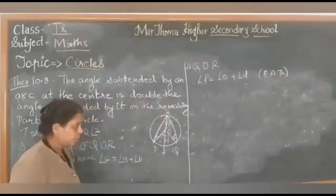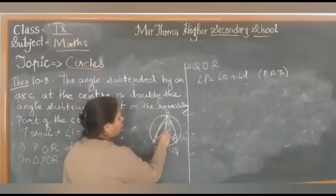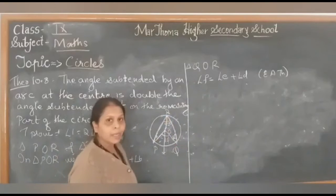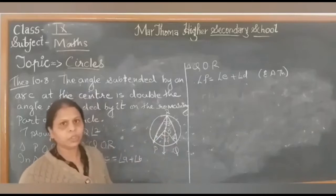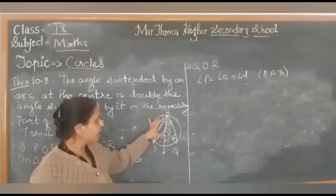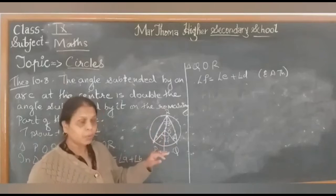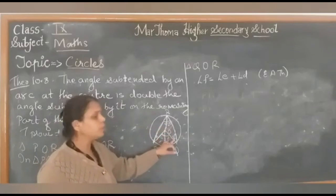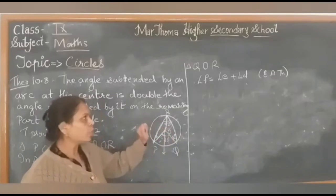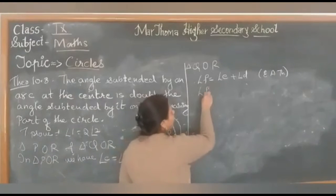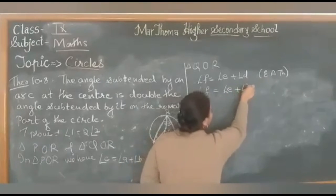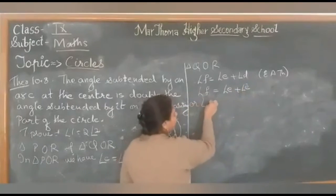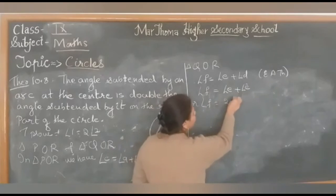Now, since OR equals OQ, because both are radii of the circle, the respective angles are equal: angle E equals angle D. Therefore, angle F equals angle E plus angle E, which means angle F equals 2 times angle E.